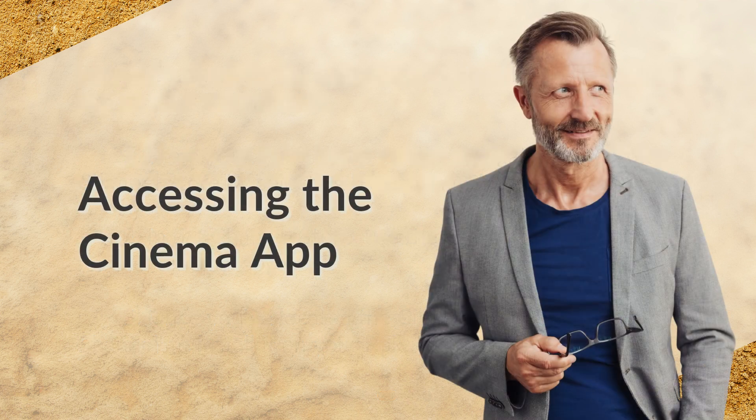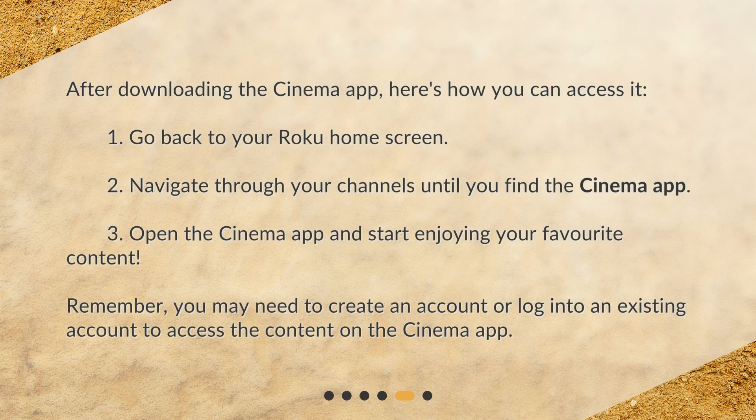Accessing the Cinema App. After downloading the Cinema App, here's how you can access it. 1. Go back to your Roku home screen. 2. Navigate through your channels until you find the Cinema App. 3. Open the Cinema App and start enjoying your favorite content. Remember, you may need to create an account or log into an existing account to access the content on the Cinema App.